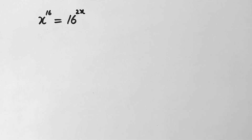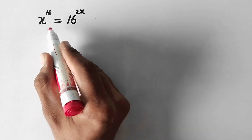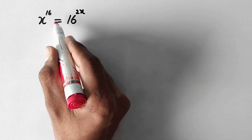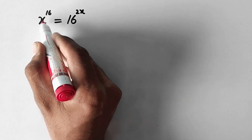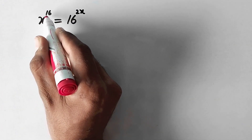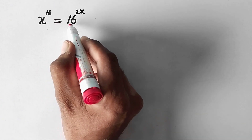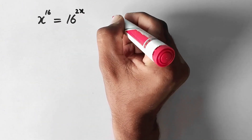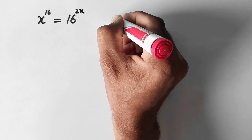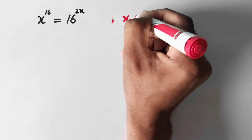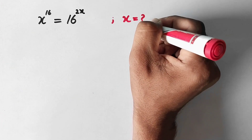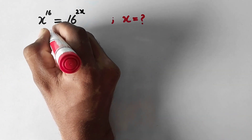Hello everyone, welcome to Explored Maths. Today we will see how to simplify this problem: x raised to power 16 equals 16 raised to power 2x, and we have to find the value of x. Let us see the solution.